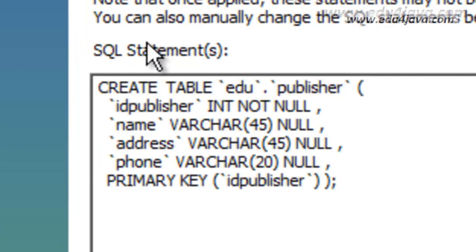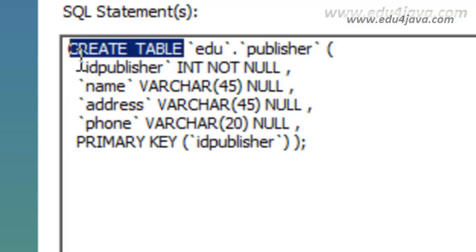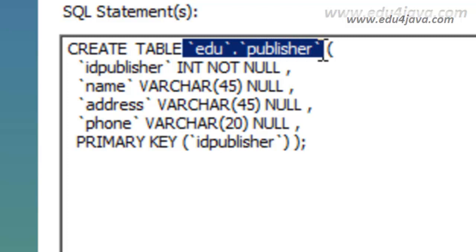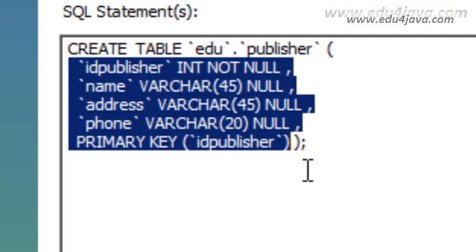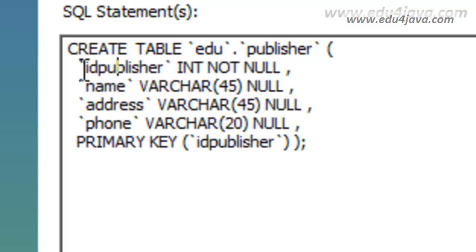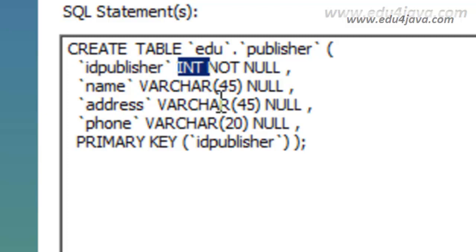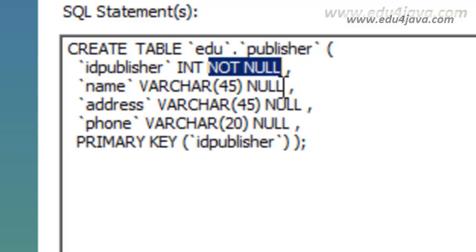Here we're going to see the sentence which was generated. Let's look at it: CREATE TABLE. This is the sentence to create a table. It says edu.publisher — edu would be the schema and publisher the table to be created. Basically in between these brackets come the fields to be created. The quotation marks are not really necessary; they would only be necessary if we wrote a strange symbol or a space. It creates a field id_publisher with an int type and it's going to be NOT NULL — it can't be null.